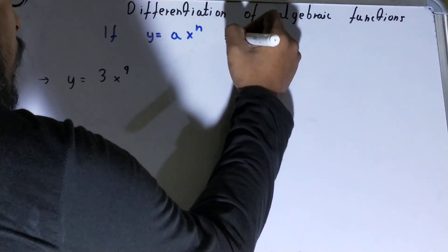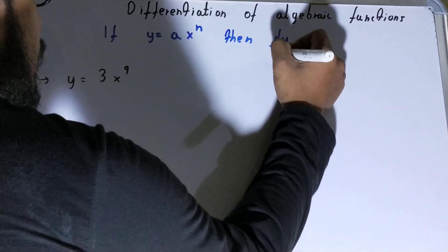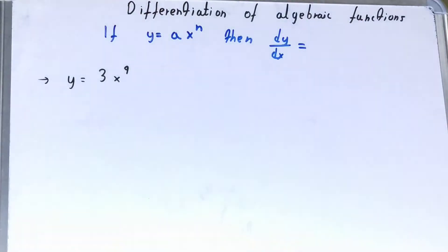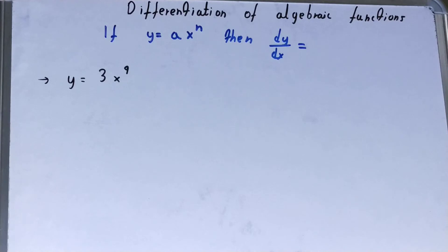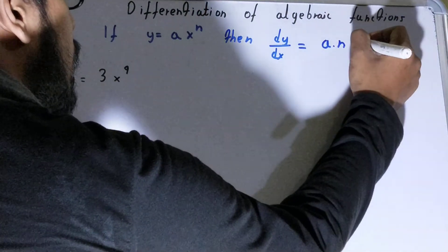So if you differentiate it, it will be dy/dx—that is, differentiating in terms of x. The answer will be a·n·x raised to power n minus 1.